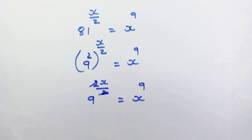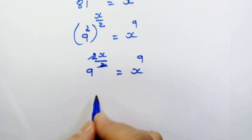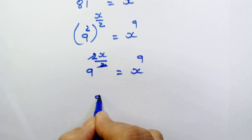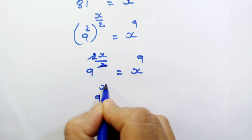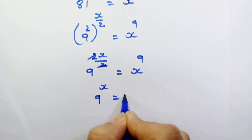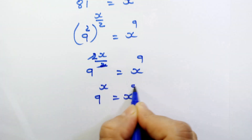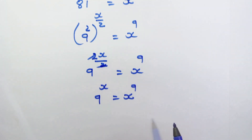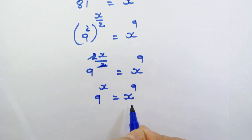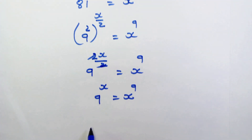The 2s will be cancelled, so we have 9 raised to x is equal to x raised to 9. Here we can equate x is equal to 9, but let's go a little further.